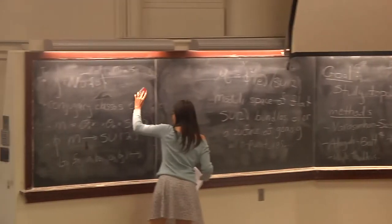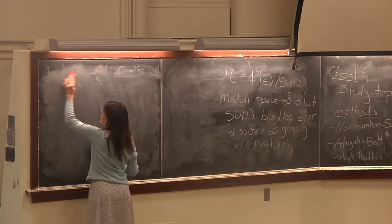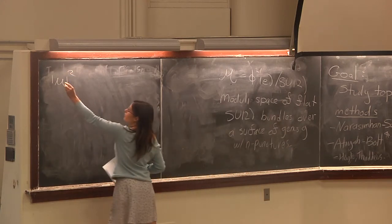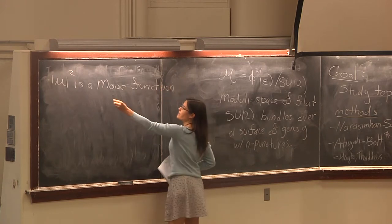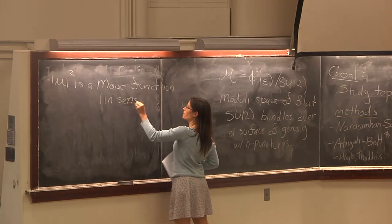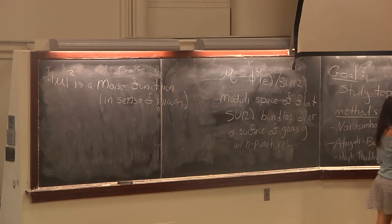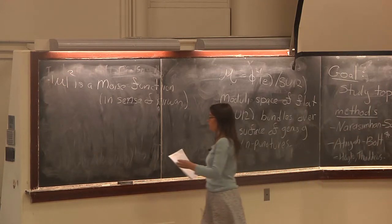These spaces were studied by, among other people, Kirwan. What she did is: remember we have a metric, so you can take your moment map and get a single function mu-squared. What she proved is that mu-squared is a Morse function — in the sense of Kirwan — which is more general in that it allows critical submanifolds and local minima, but the basic point is she proved it satisfies conditions that guarantee the exact same sequence as you'd expect in the Morse situation. She also showed what the critical set is.